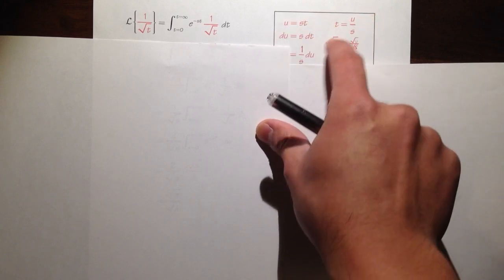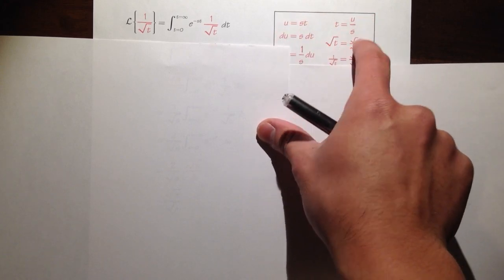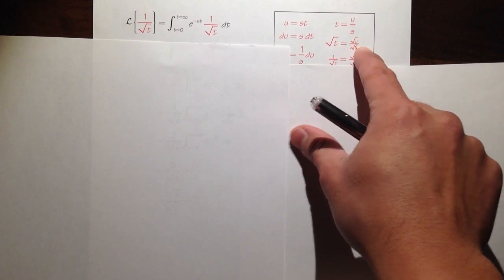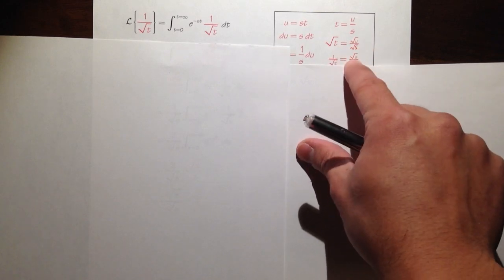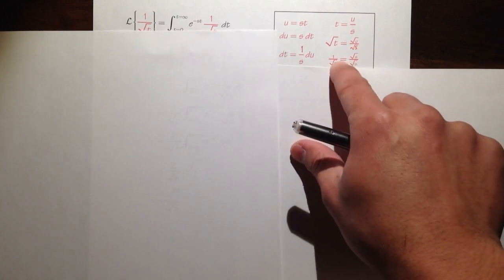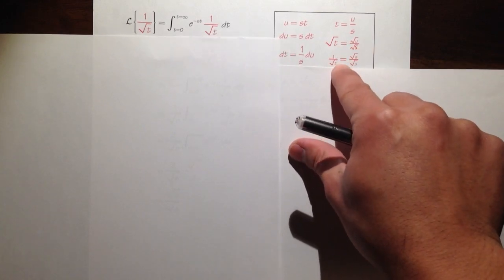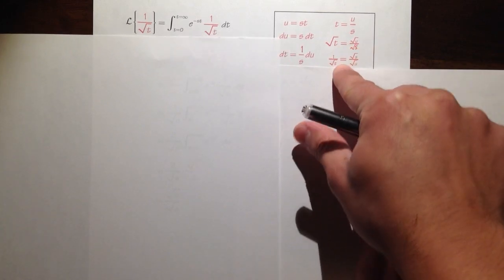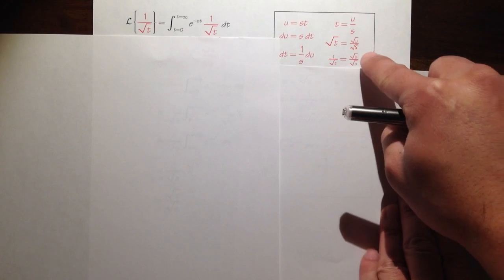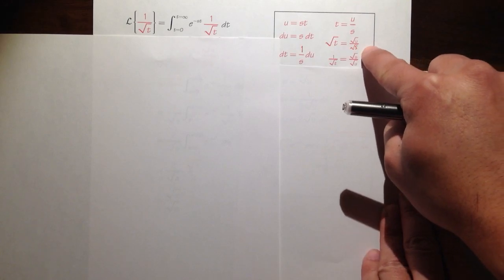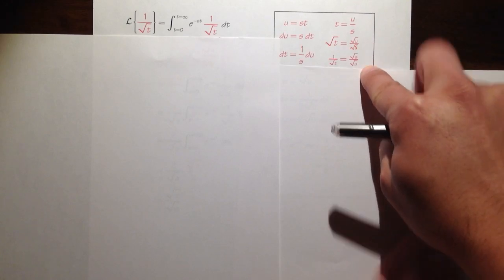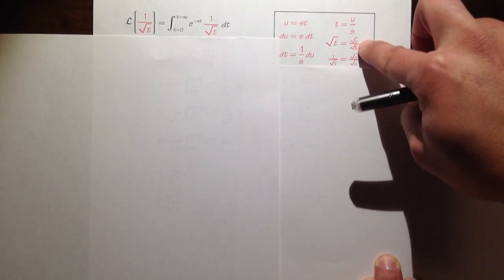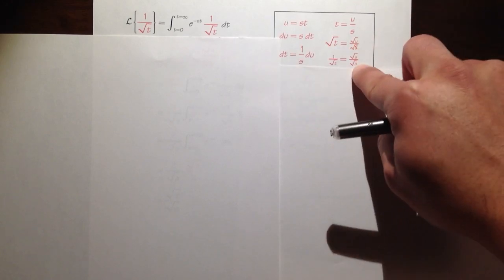And we can square root both sides: square root of t is equal to square root of u over square root of s. Then we can take the reciprocal of this: 1 over square root of t is equal to square root of s over square root of u, which is just a flip of that.